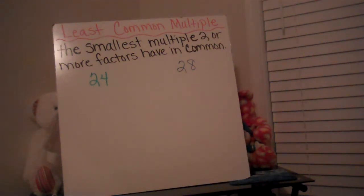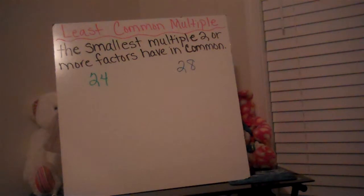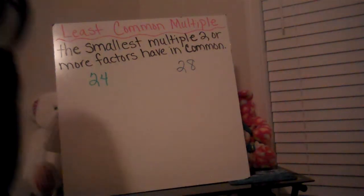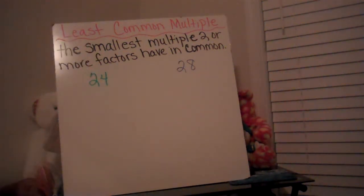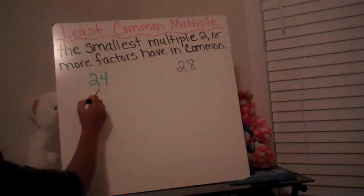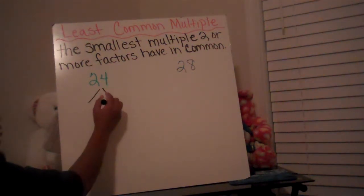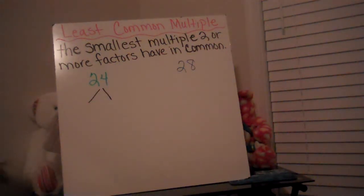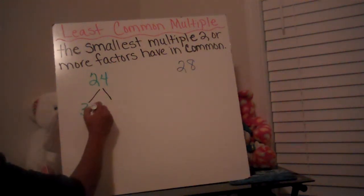We're going to begin finding the least common multiple between 24 and 28 using the factor tree method. To find the prime factorization of 24, we're going to decompose it into its prime factors. Two factors that can make 24 — I'm going to pick 3 and 8, so 3 times 8 makes 24.